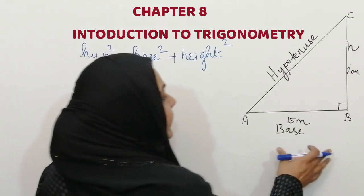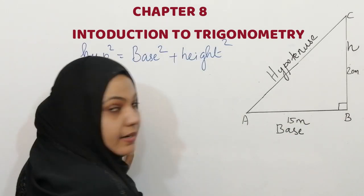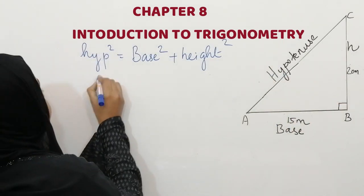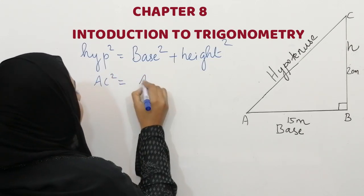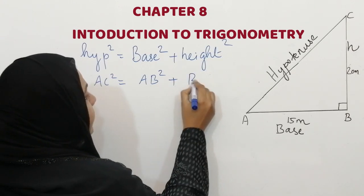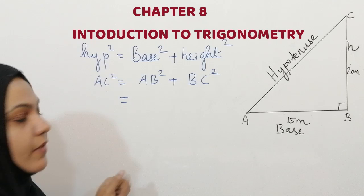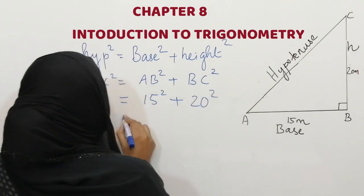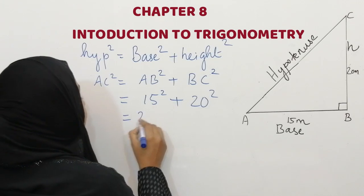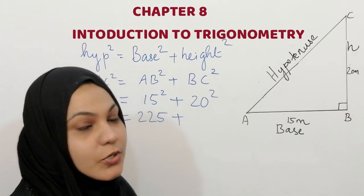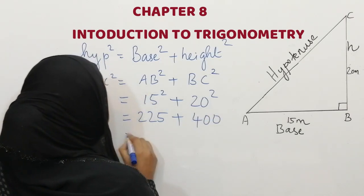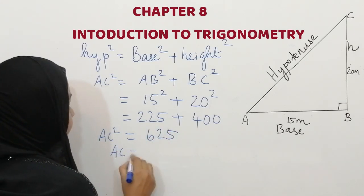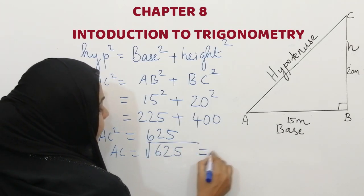So we can do our first question. In triangle ABC, right angle at B, AB is given as 15 and BC is given as 20. We have to find the hypotenuse. So AC square is equal to AB square plus BC square. That is 15 square plus 20 square, which is 225 plus 400, that is 625. So AC is equal to square root of 625, that is 25.